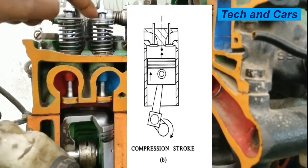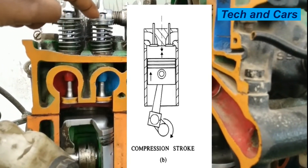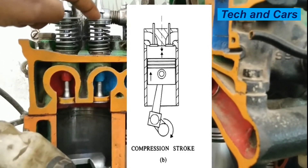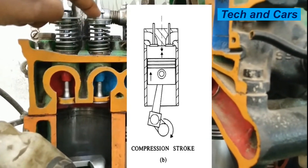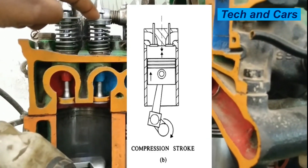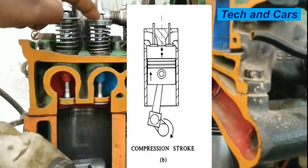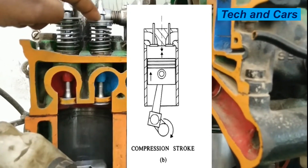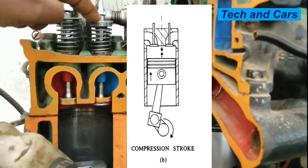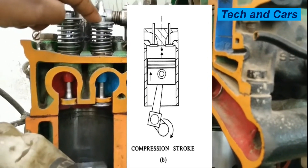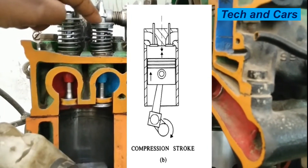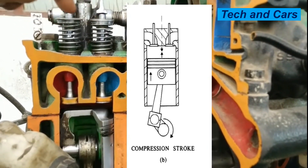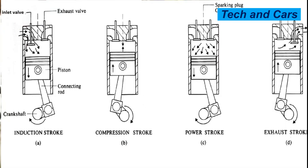The intake stroke is followed by the compression stroke. The compression stroke is where the piston is moving upward, compressing the mixture of air and fuel into a small space above the piston, which is also called the combustion chamber. When the piston has reached the top of its stroke, a large quantity of air-fuel mixture is now tightly packed into a small space. Cylinder pressure will rise and cylinder temperature will also increase. At the end of this compression stroke, the spark is initiated by the ignition system, causing the compressed air-fuel mixture to ignite and start burning.